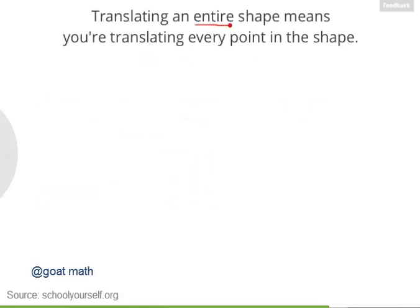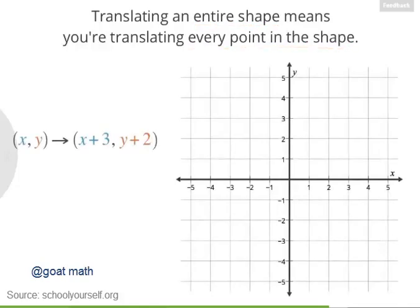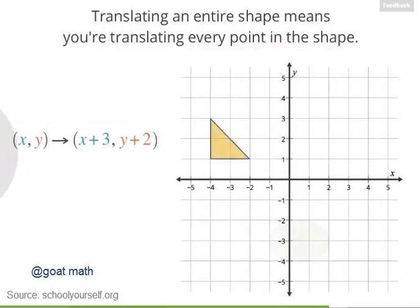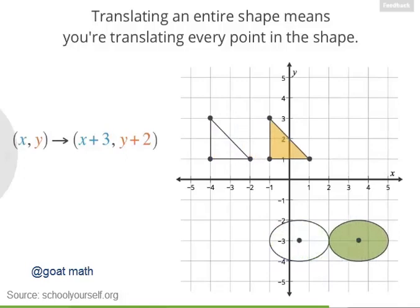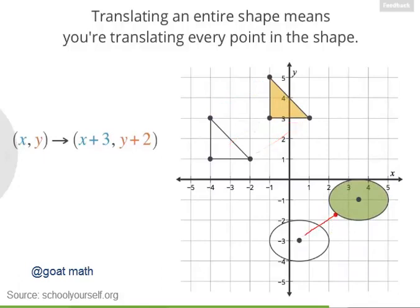Now one more thing. When we say we're translating a shape, that means we're translating every point in the shape. So consider the translation x, y to x plus three, y plus two. Suppose we want to apply this translation to this triangle and this ellipse — so we're moving these shapes three units right and two units up. To do this, it helps to keep track of a few points in the shapes, like the triangle's vertices or the center of the ellipse.